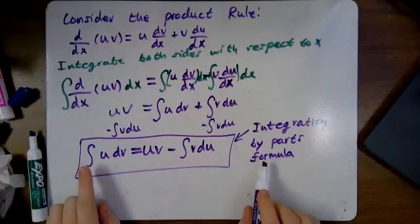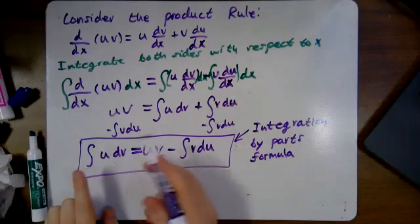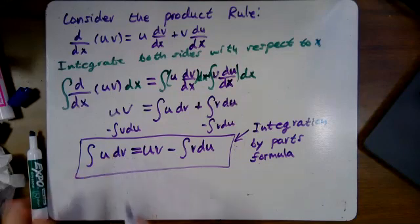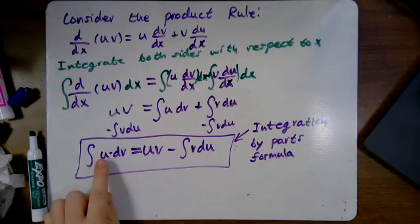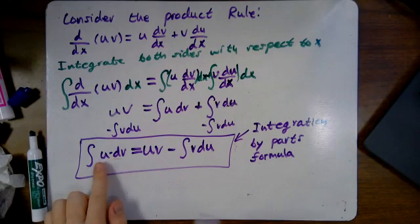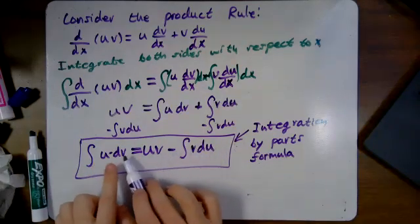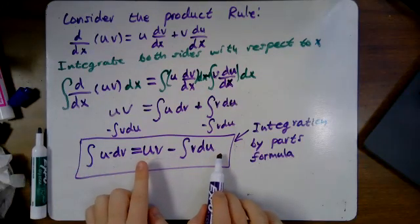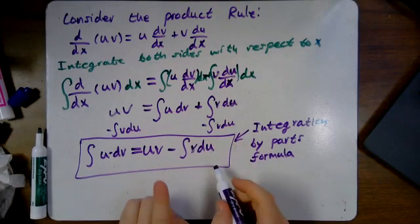What this says is that if we're taking the integral of a product — some function times some other function with a dx — we can find the antiderivative by finding the derivative of u to get du, and finding the integral of dv to get v, then plugging them in. We rewrite it as a new integral that may be easier to solve.